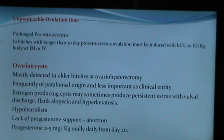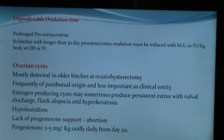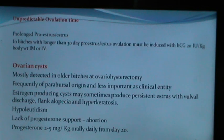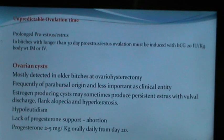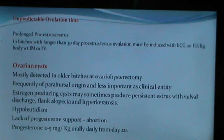Long proestrus or estrus in bitches longer than 30 days may occur, and estrus or ovulation must be induced with HCG 20 international units per kg IM or IV. Ovarian cysts are uncommon in the bitch, mostly detected in older bitches at ovariohysterectomy, frequently of parabursal origin. Estrogen-producing cysts may sometimes produce persistent estrus with vulvar discharge, flank alopecia, and hyperkeratosis. They can be successfully treated by administration of HCG.